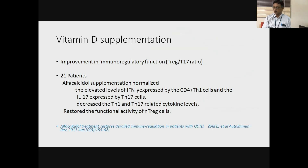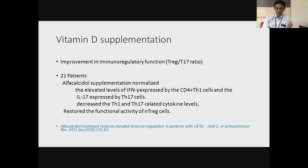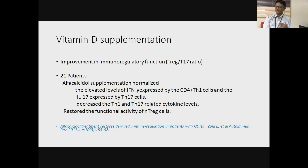One paper I found interesting, published in 2011, shows that for UCTD and overlaps — UCTD in particular — vitamin D supplementation has improved immunoregulatory function in about 21 patients. Many connective tissue disease features show high CD4 Th1 and Th17 lymphocyte activity producing Th1 and Th17 cytokines. Vitamin D supplementation reduces these Th1 and Th17 cytokine levels and restores T-regulatory cells, which are inhibitory to the active inflammatory process. Vitamin D supplementation enhances the functional activity of T-regulatory cells. The imbalance between T-regulatory and Th17 or Th1 ratios tends to be corrected by vitamin D supplementation.